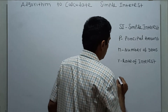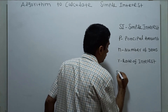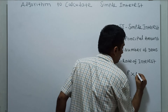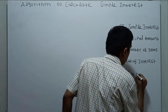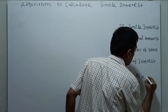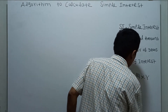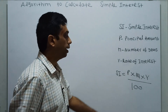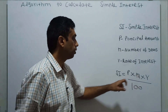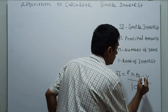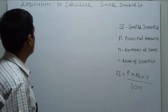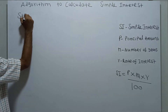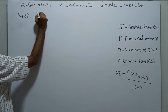The formula for simple interest is SI equal to P star N star R divided by 100. To calculate using this formula, we are going to write an algorithm. Step 1 is the logical start of the algorithm.